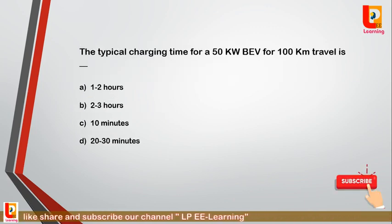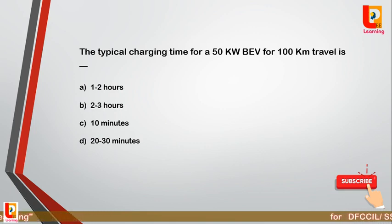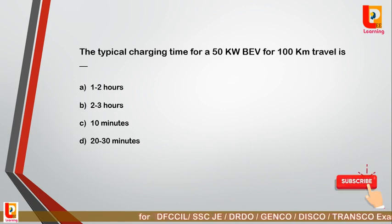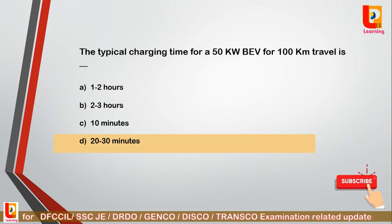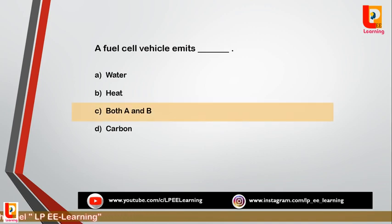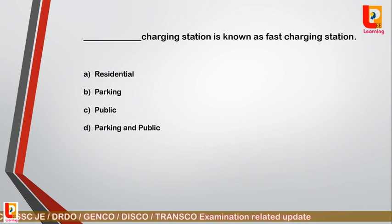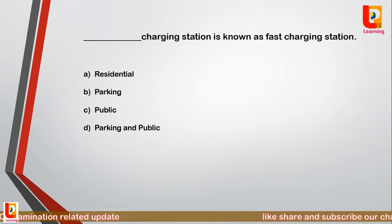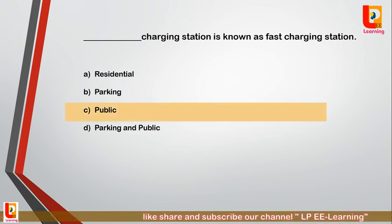Question 30: The typical charging time for a 50 kilowatt BEV for 100 kilometer travel is — option A: 1 to 2 hours; option B: 2 to 3 hours; option C: 10 minutes; option D: 20 to 30 minutes. Correct answer is option D: 20 to 30 minutes. Question 31: A fuel cell vehicle emits — option A: water; option B: heat; option C: both A and B; option D: carbon. Correct answer is option C: a fuel cell vehicle emits both water and heat. Question 32: Which charging station is known as a fast charging station — option A: residential; option B: parking; option C: public; option D: parking and public? Correct answer is option C: public charging station is known as a fast charging station.